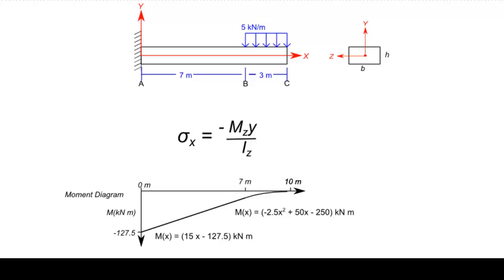Thanks to our previous analysis, we know the moment about the z-axis at every location inside the beam from the moment diagram. Based on this diagram and equation, the maximum stress will occur where we have the maximum moment, which in this instance is directly at the wall.